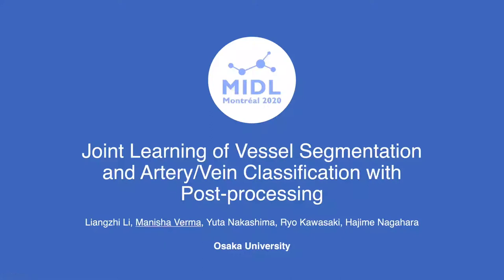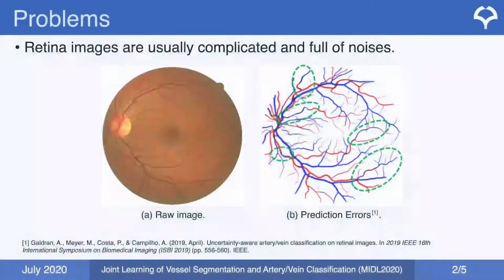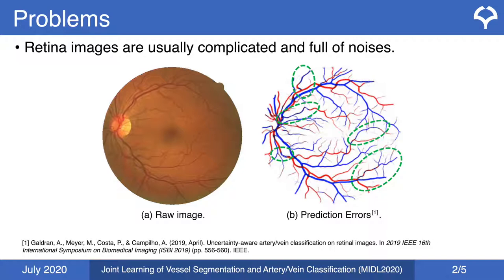In this work, we target the problem of retina vessel classification. Retina vessel classification is a difficult task because of many reasons, such as training data availability, data imbalance because of foreground and background, etc.